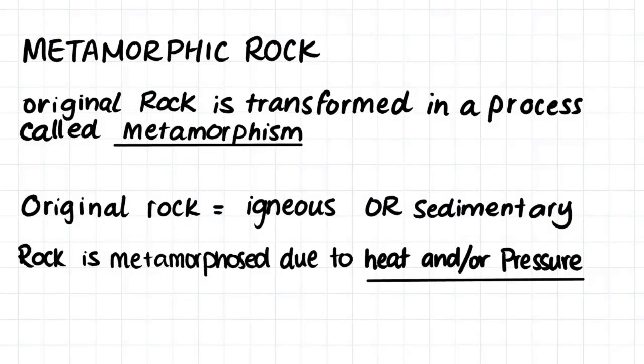Finally, the last rock type we will have a look at is metamorphic rock. Metamorphic rock forms when original rock is transformed in a process called metamorphism. When a pre-existing rock, which can either be sedimentary or igneous, is subjected to high temperatures and/or great pressure, the rock can be physically and chemically changed, producing metamorphic rocks. There is a huge variety of metamorphic rocks because there is a huge number of igneous and sedimentary rocks which can experience the process of metamorphism.